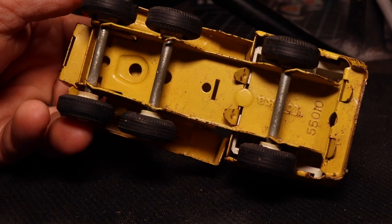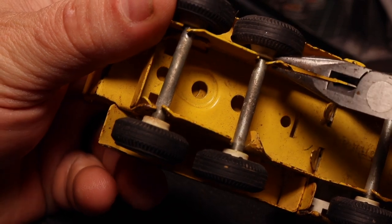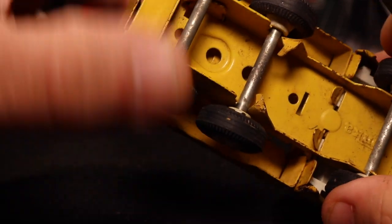The first thing I need to do is remove the three axles. There are these small tabs. You simply bend them out of the way and remove the entire assembly.